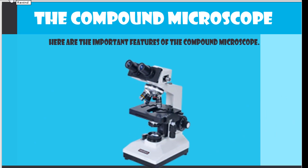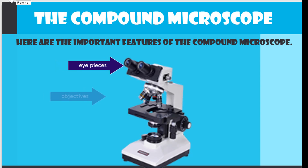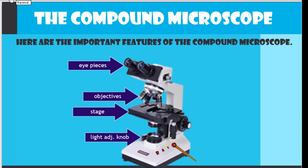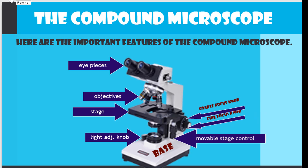Here are the important features of the compound microscope: the eyepieces, the objectives, the stage, the light adjustment knob, the base, the movable stage control, the fine focus knob, the coarse focus knob, the arm, and the rotating nose piece.